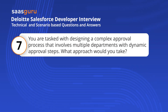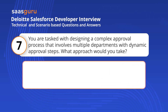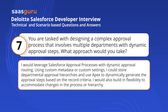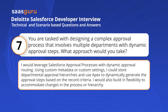You are tasked with designing a complex approval process that involves multiple departments with dynamic approval steps. What approach would you take? I would leverage Salesforce approval processes with dynamic approval routing. Using custom metadata or custom settings, I could store departmental approval hierarchies and use APEX to dynamically generate the approval steps based on record criteria. I would also build in flexibility to accommodate changes in the process or hierarchy.